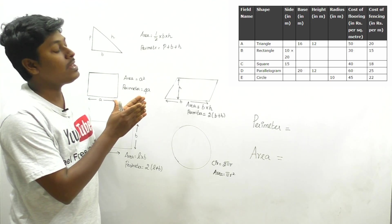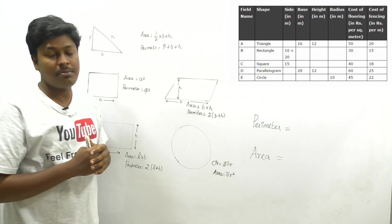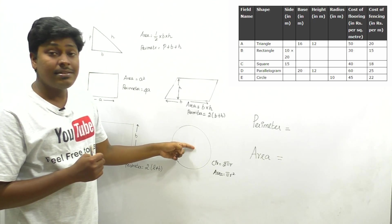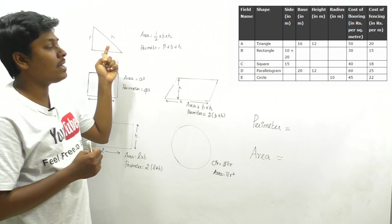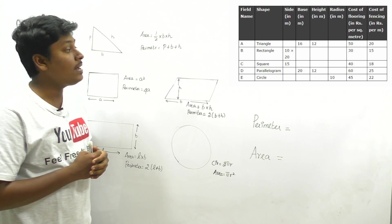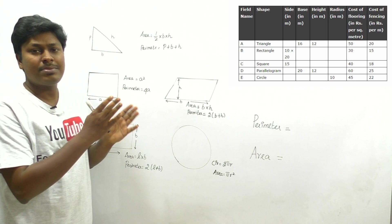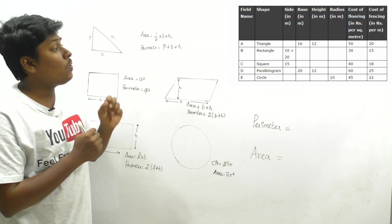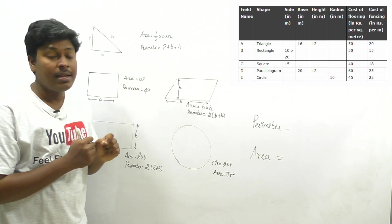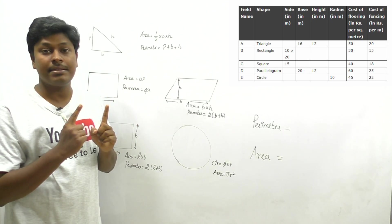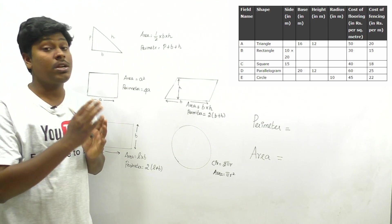If the field is in a particular shape we can know the values given for it. Field E is a circle so only the radius will be given. E is circle, C is square, D is parallelogram, A is triangle, and B is rectangle. The values given are side, base, height, and radius for the respective fields.